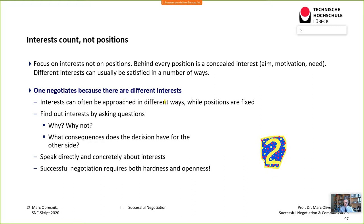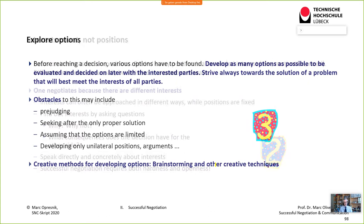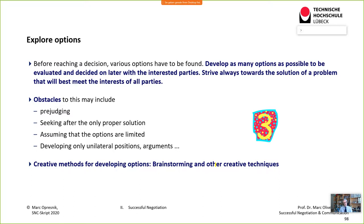Interests can be approached in different ways while positions remain fixed. Find the underlying interests by asking open questions: Why? Why not? What consequences does this decision have for the other side? Speak directly and concretely about interests. Successful negotiation requires hardness on points but also openness to the other person's suggestions, worries, and concerns.